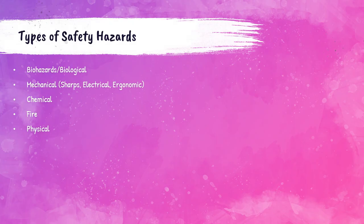There are many types of safety hazards in the clinical laboratory. The main one is biohazard — infectious microorganisms. There are also mechanical hazards including sharps like needles or glass, electrical hazards, chemical hazards from preservatives or reagents, fire hazards, and physical hazards caused by obstruction of walkways, wet floors, or improper clothing.